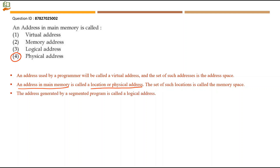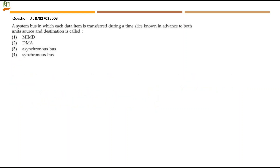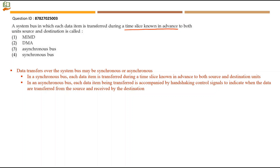The address generated by a segmented program is called a logical address. The memory address tells the control where to find an operand in memory. Next question: a system bus in which each data item is transferred during a time slice known in advance to both source and destination units is called what? In a synchronous bus, each data item is transferred during a time slice known in advance to both units. Option 4, synchronous bus, is the right answer.